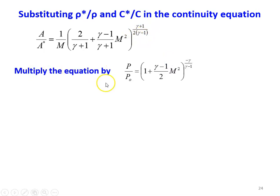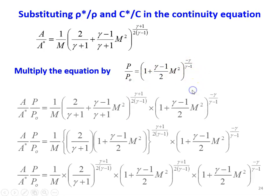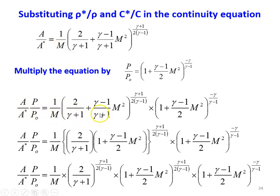So we multiply the equation by P/P₀. P/P₀ is the ratio of static pressure to stagnation pressure, which equals [1 + (γ−1)/2 × M²]^(−γ/(γ−1)). Now it becomes A/A* × P/P₀ equal to (1/M) × the first term A/A* being (1/M) × [2/(γ+1) + (γ−1)/(γ+1) × M²]^((γ+1)/(2(γ−1))), and P/P₀ equals [1 + (γ−1)/2 × M²]^(−γ/(γ−1)).